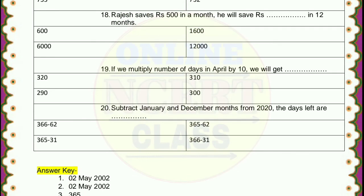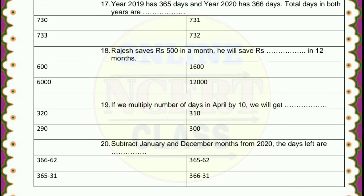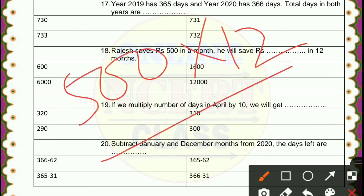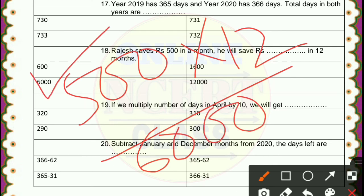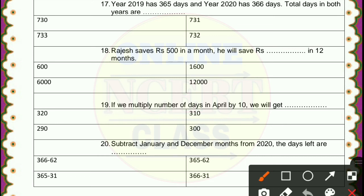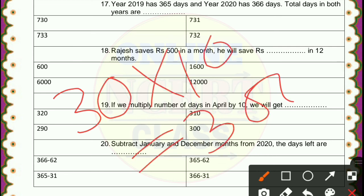Question 18: Rajat saves rupees 500 in a month. He will save how many rupees in 12 months? It is very easy: 500 multiplied by 12, because one month is 500, so for 12 months, 12 times 5 is 60 — so 6,000 is the correct answer. Question 19: if we multiply the number of days in April by 10, we get how much? First, April has 30 days, and 30 into 10 is 300. So 300 is the correct answer.